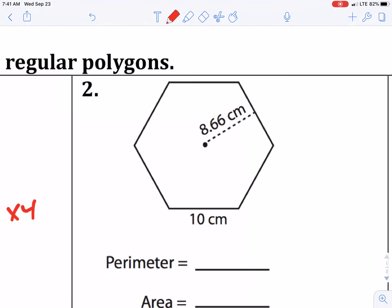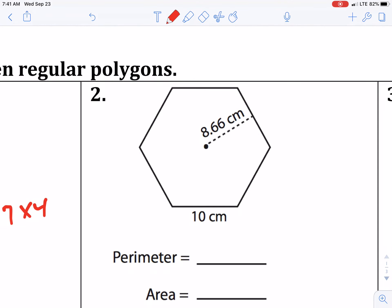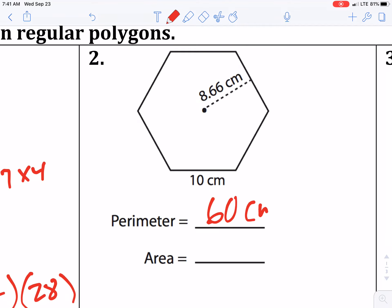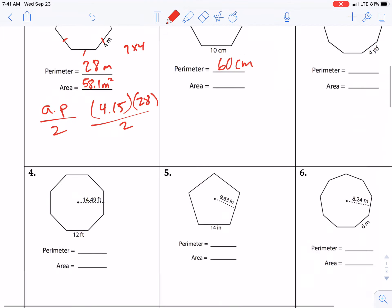All right, the perimeter in number two, there is six sides. Six times 10 is 60 centimeters. Okay, so that should be pretty straightforward.